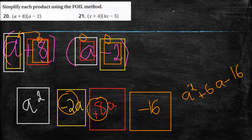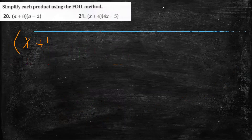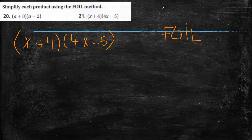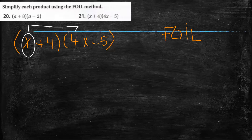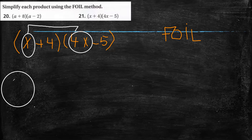Is it clear? Yes, teacher. That's okay. Let's do now another example. We have x plus 4 times 4x minus 5. F, O, I, L.